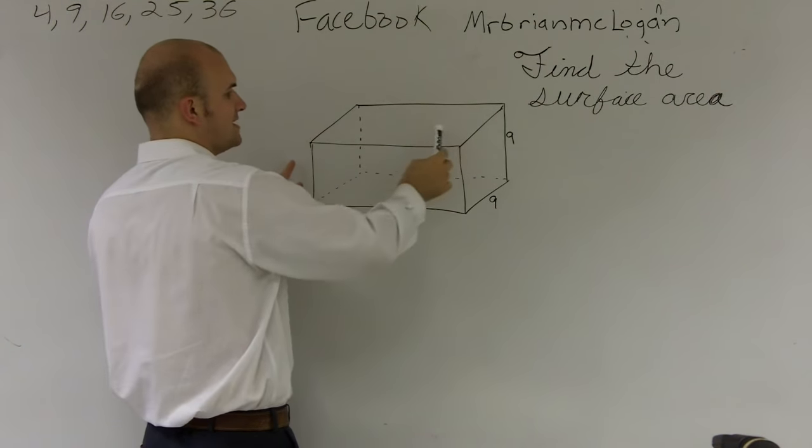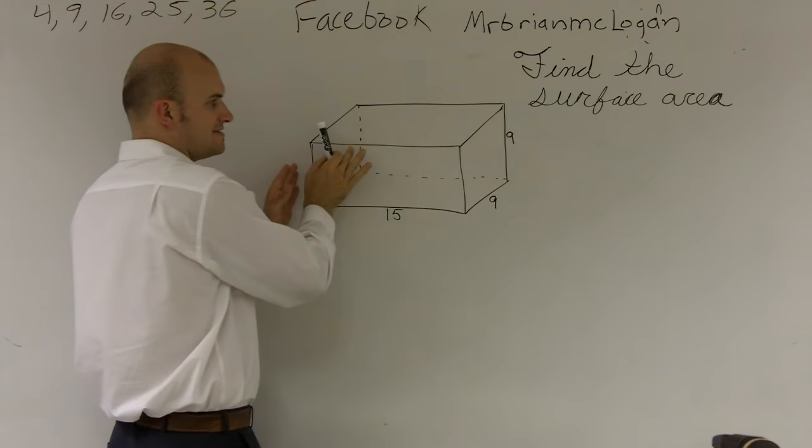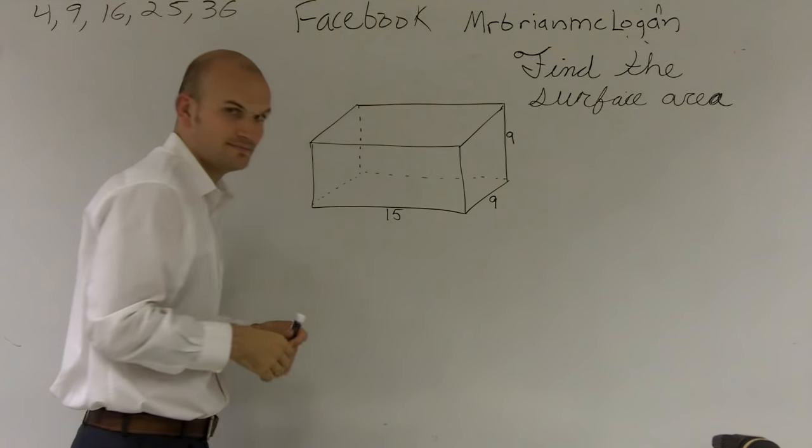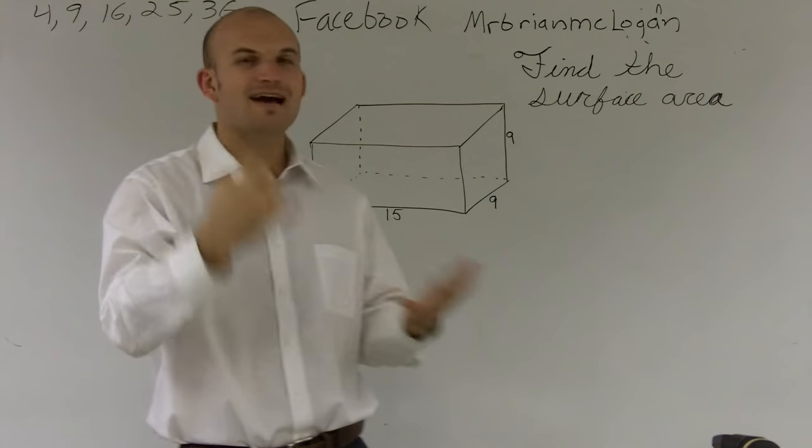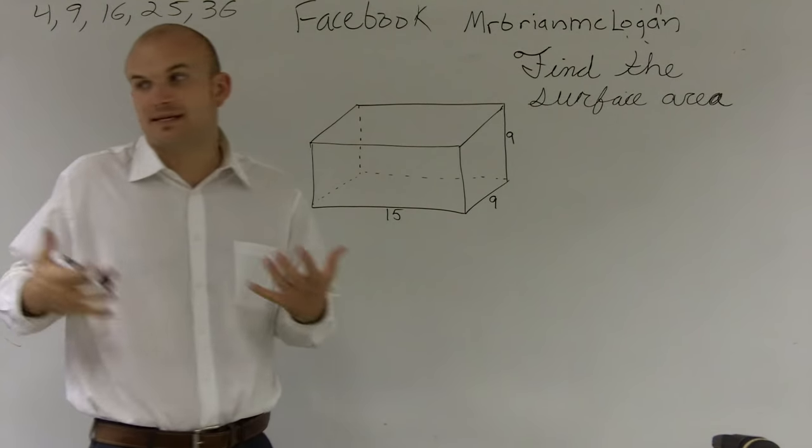this top face, the bottom face which you can't see, this right side, the left side, and the far back side. So we want to find the area of every single one of them and add them all up. Combined, that's going to give us the surface area.